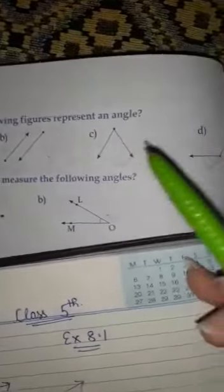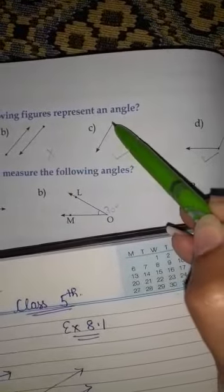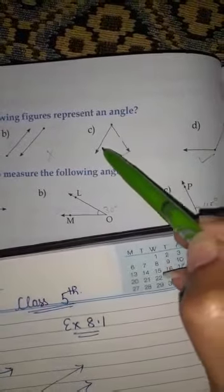In third, C, these two line segments having this one common point. Then, these lines represent an angle. Then, do tick.